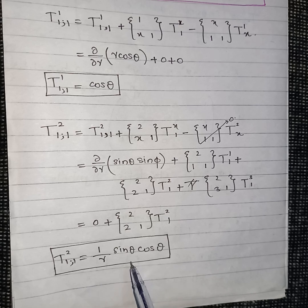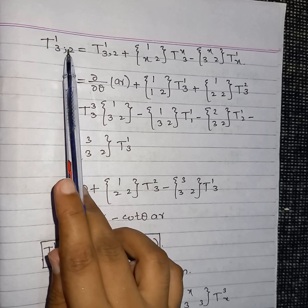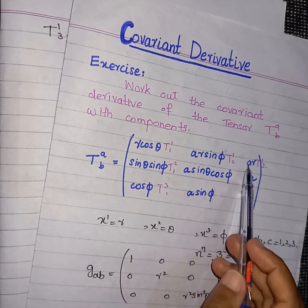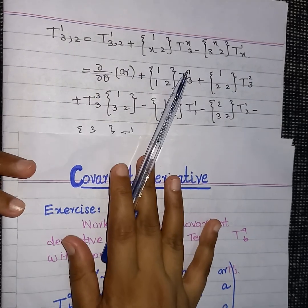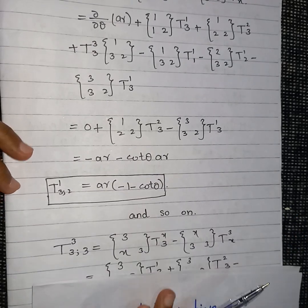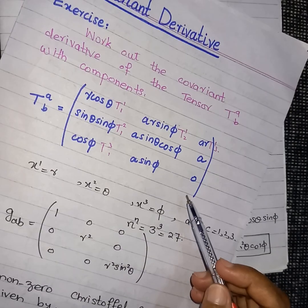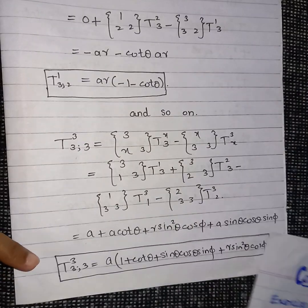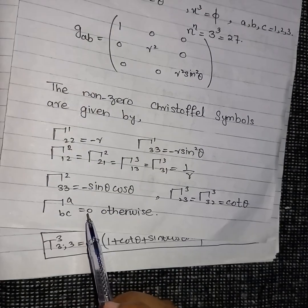For t¹₃;₂, the covariant derivative of t_{13} with respect to x2 = theta: t_{13} equals ar, so we compute the partial derivative of ar with respect to theta. Substituting dummy index x = 2 and the relevant non-zero Christoffel symbols gives the result shown. Similarly, t_{33} equals zero, and taking its partial derivative with respect to x3 = phi, then substituting the non-zero Christoffel symbols, yields the result shown.